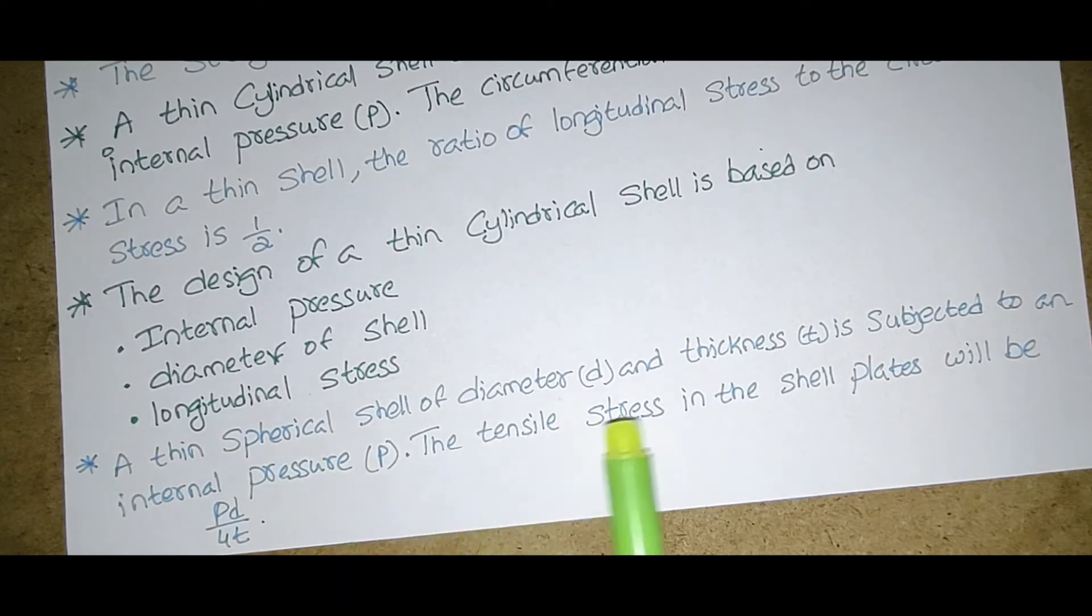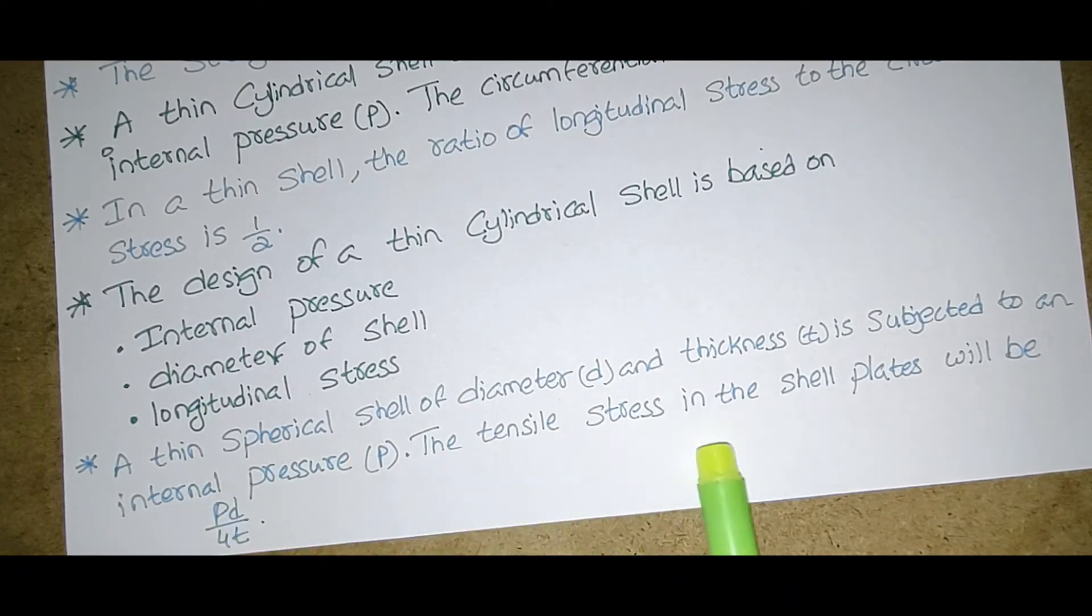A thin spherical shell of diameter D and thickness T is subjected to an internal pressure P. The tensile stress in the shell plates will be PD by 4T.